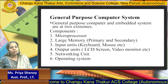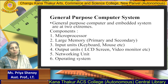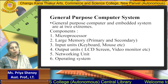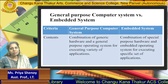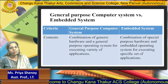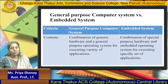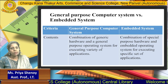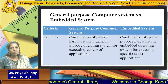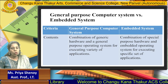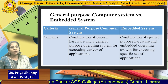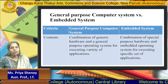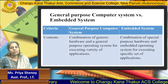In an embedded system, we said it will have hardware — basically a microprocessor — and it will also have input and output units, but the operating system may or may not be present. A general purpose computer system is a combination of generic hardware and a general purpose operating system used for executing a variety of applications, whereas an embedded system is a combination of special purpose hardware and an embedded operating system used for executing only a specific set of applications.